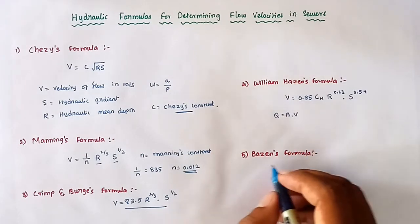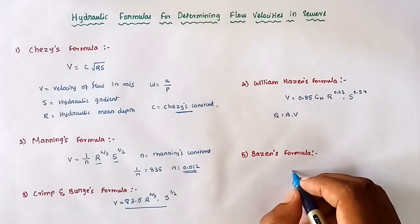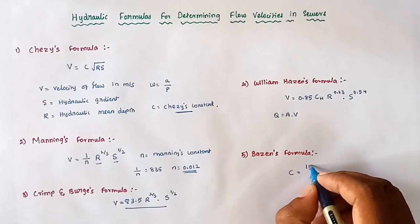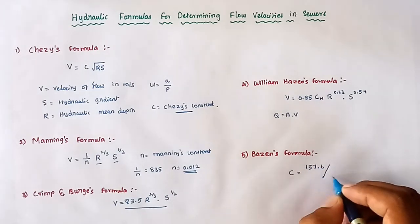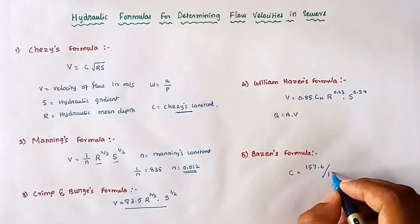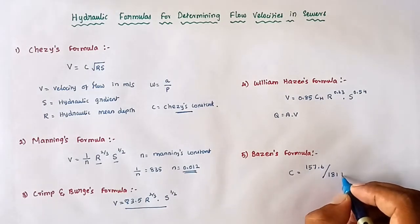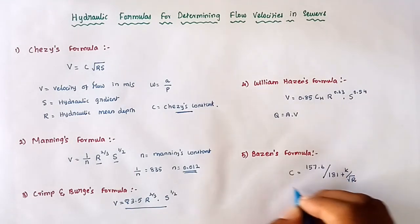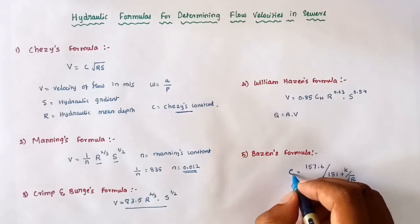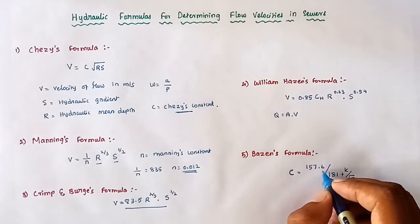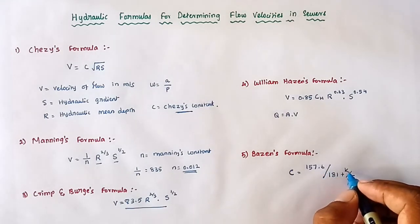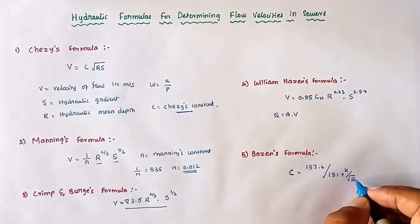Next is Bazin's formula: C = 157.6 / (1 + K / √R), where C is Chezy's constant, K is Bazin's roughness coefficient, and R is the hydraulic mean depth.